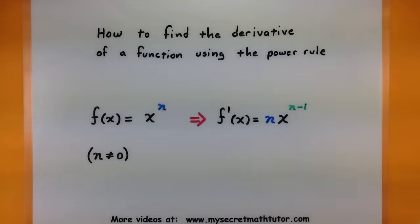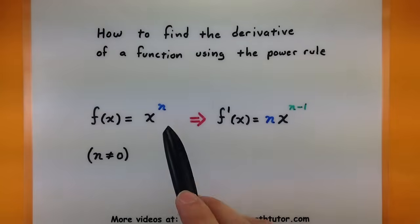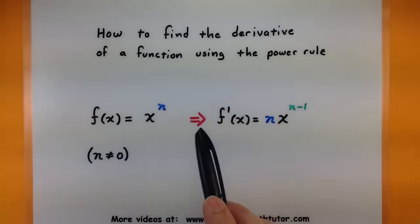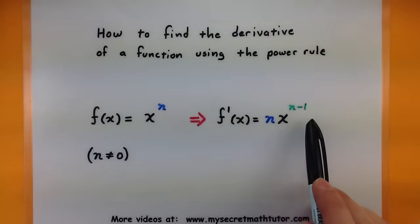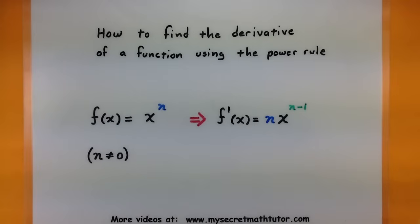Because if it's zero, it'd just be a constant and then you're taking the derivative of a constant. So the way this rule works is whatever power that is, you drop it out in front and then you reduce the power by one.